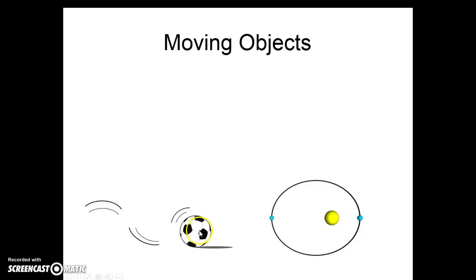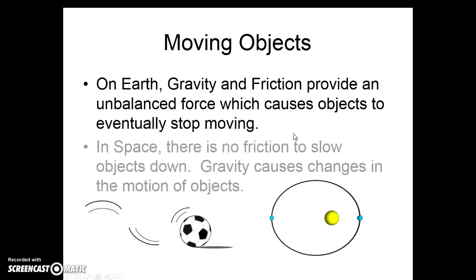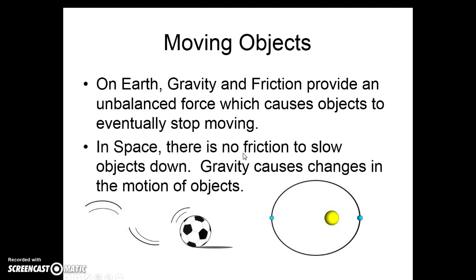Here's the scoop on moving objects. If I kick a soccer ball, is it going to keep going forever? No. We are on Earth. We have gravity, which brings things in contact with the ground and other things, and they experience friction. Gravity and friction constantly provide an unbalanced force, which causes objects to eventually stop moving. In space, there's essentially no friction — no air and very few particles. Gravity causes changes in the motion of objects as they orbit something, like the sun or the earth, but they generally don't slow down. We're mostly going to concern ourselves right now with objects on Earth.